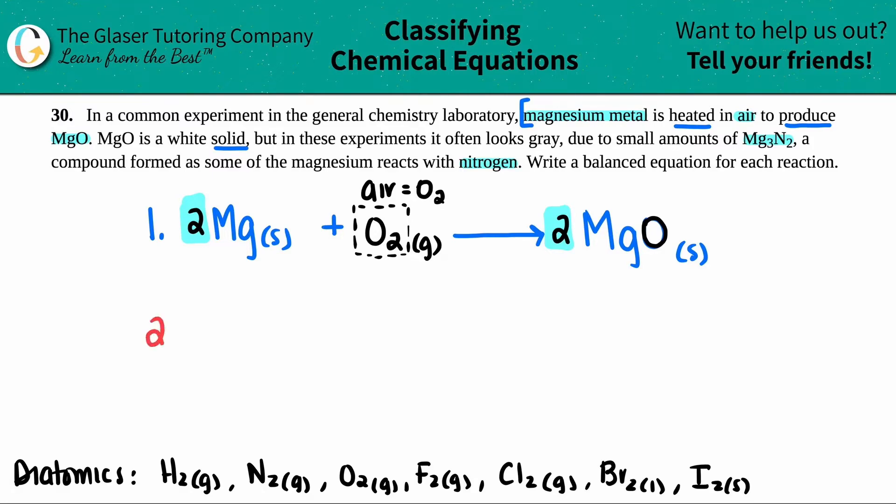Now we just have to do the second equation. Let's see. Now they picked up here. They said MgO is a white solid, but in these experiments, it often looks gray. Due to small amounts of Mg3N2, a compound formed as some of the magnesium reacts with nitrogen. Okay. So that's my reaction. Magnesium is actually reacting with nitrogen.